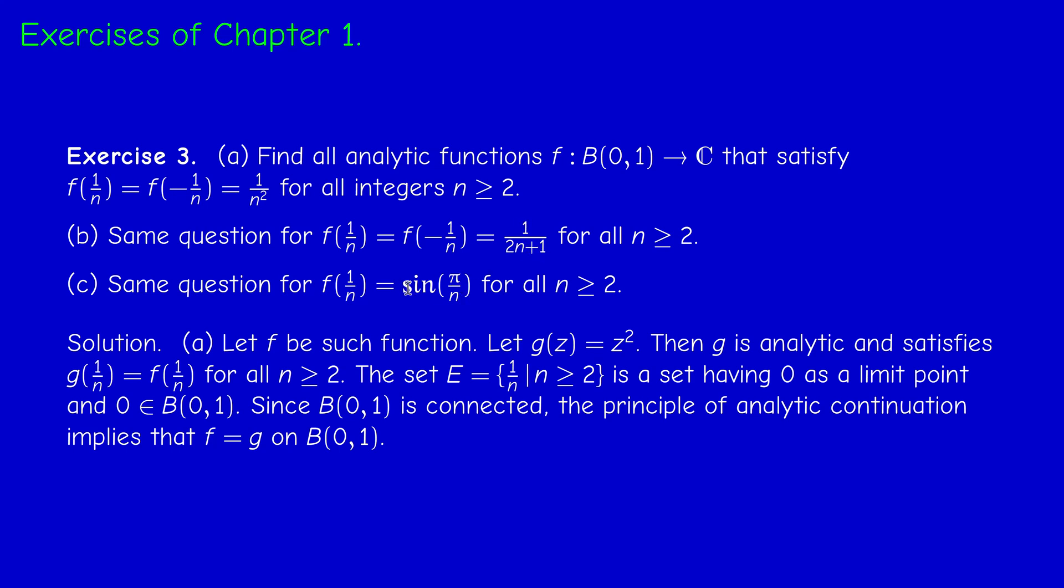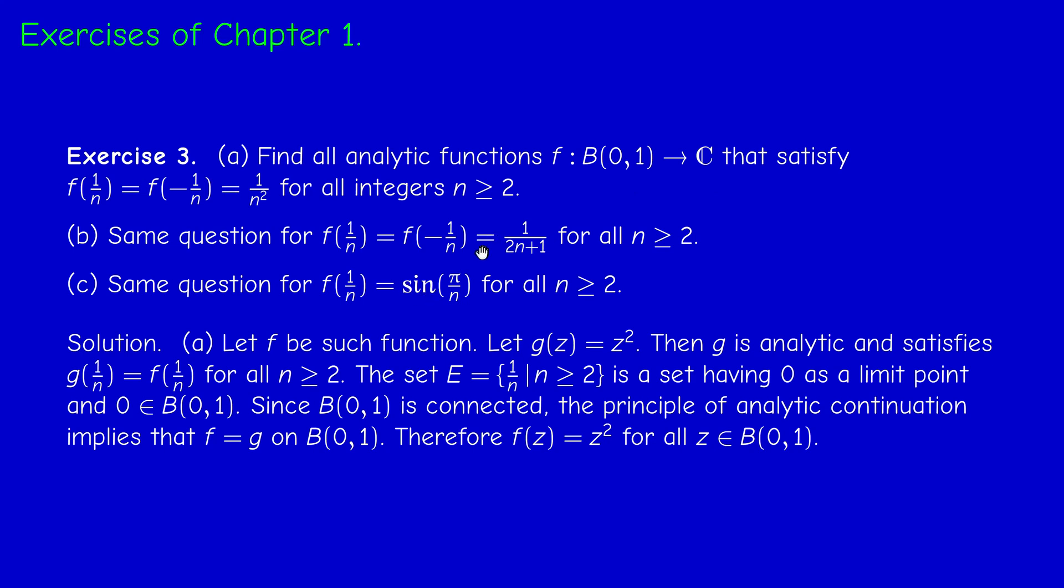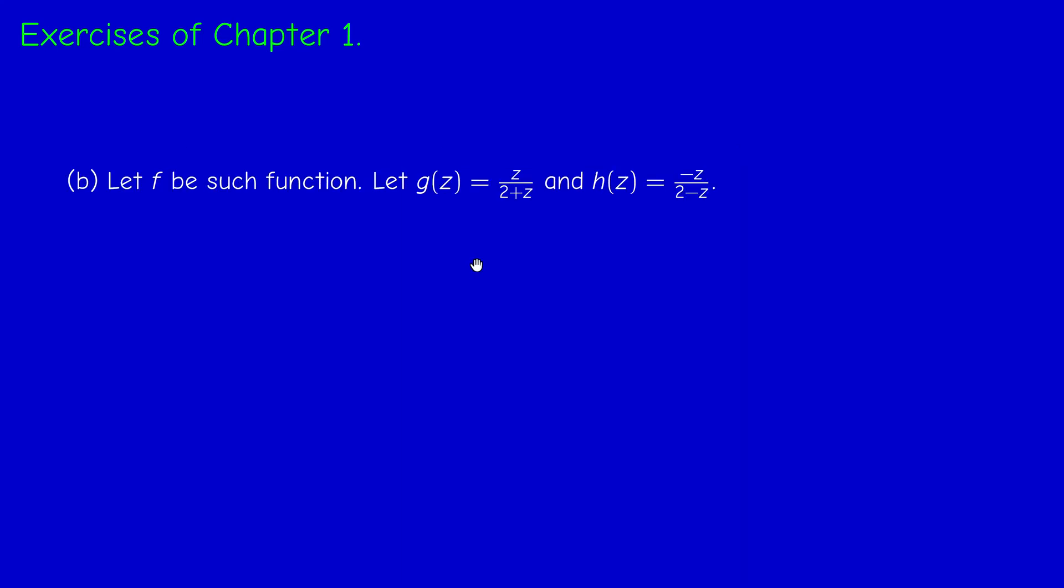So z over 2 plus z satisfies the first requirement. Now, if we replace minus 1 over n by z, we obtain another candidate, which is minus z over 2 minus z. And these two functions are analytic. So let us first concentrate on relation between G and F.